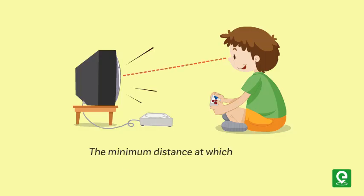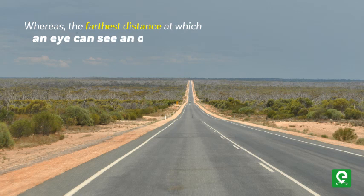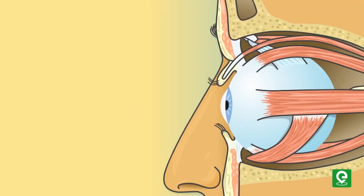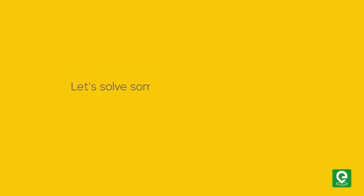The minimum distance at which an eye can see objects is 25 centimeters, whereas the farthest distance at which an eye can see an object is infinity. This concludes our video on the human eye.